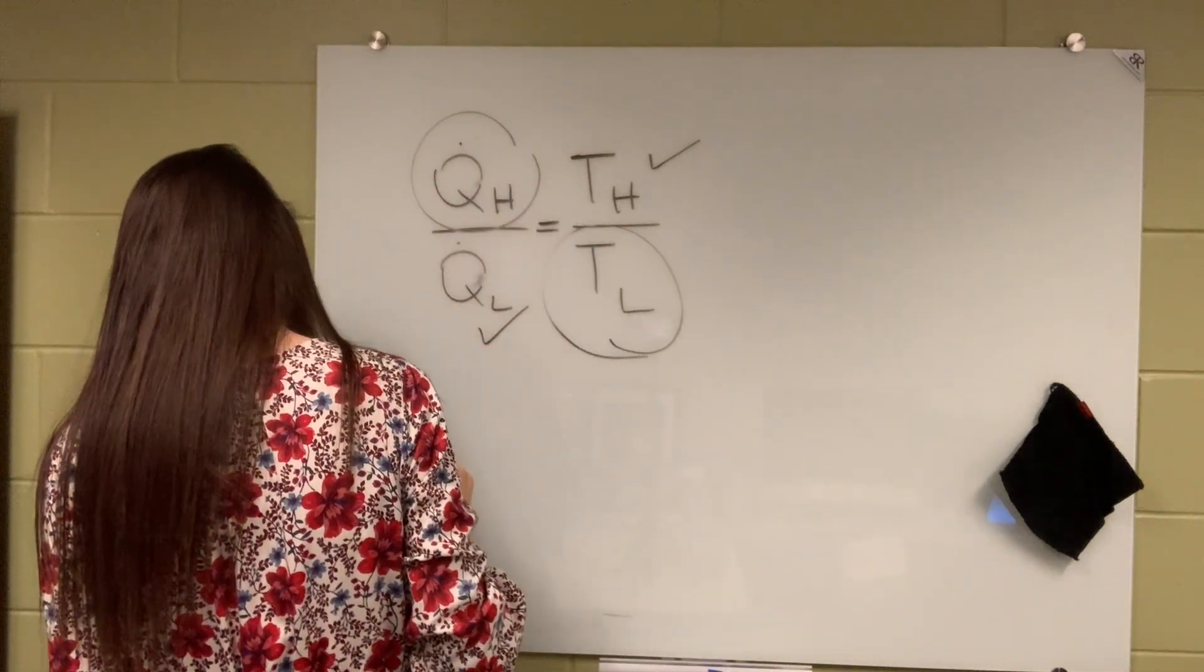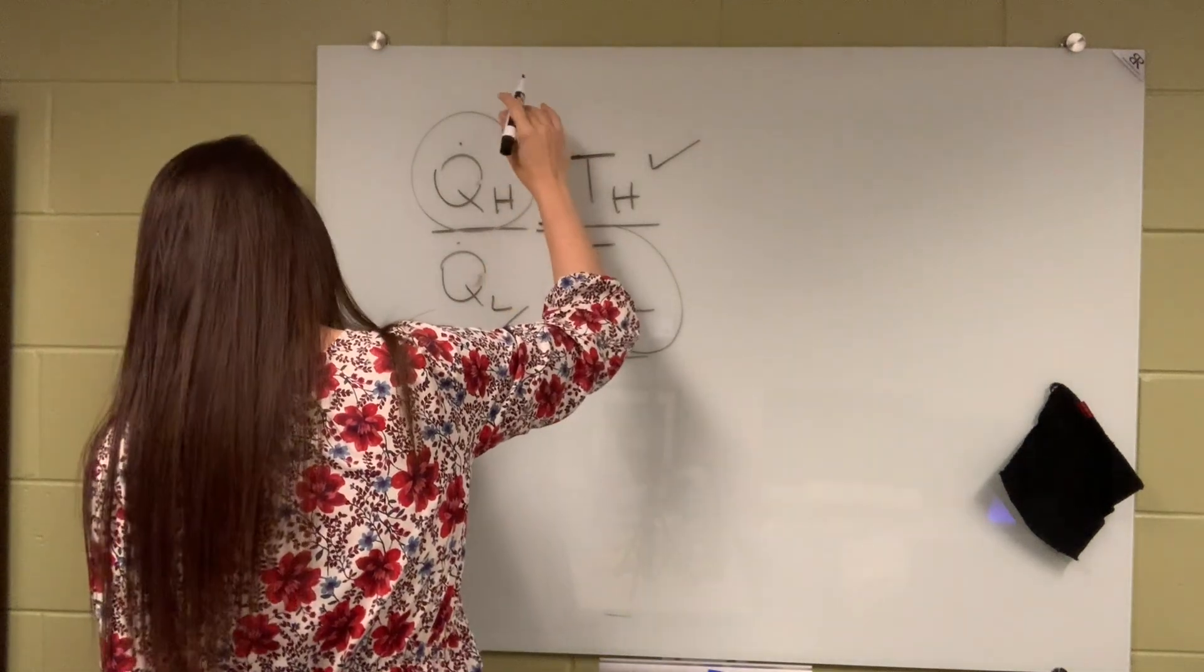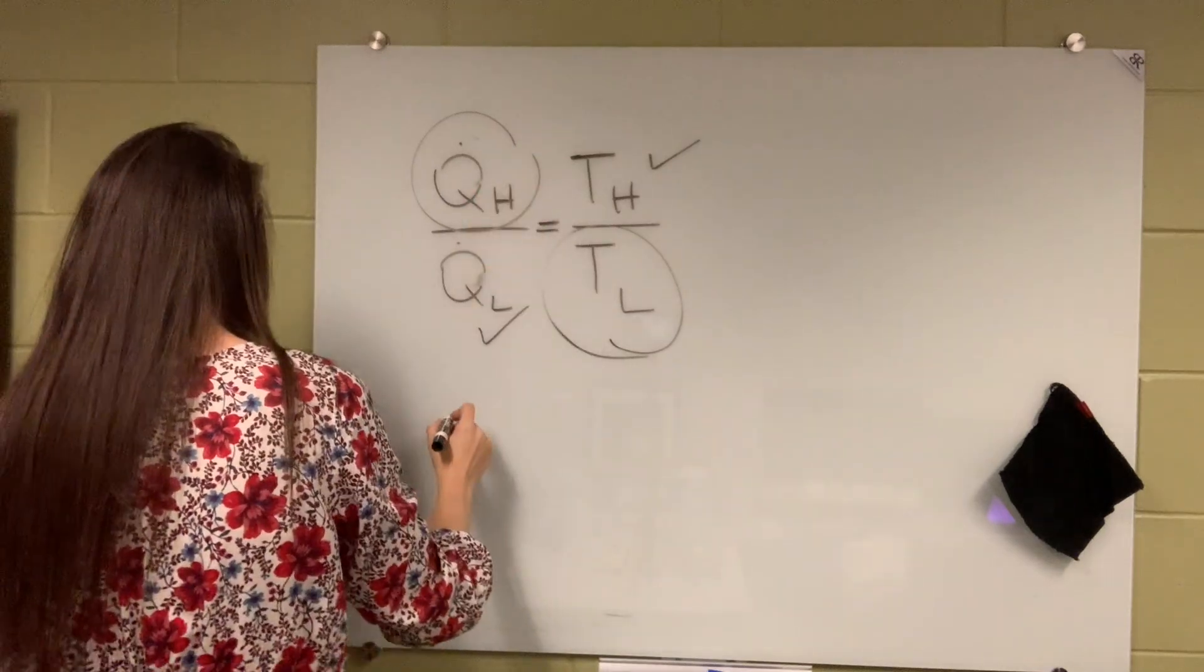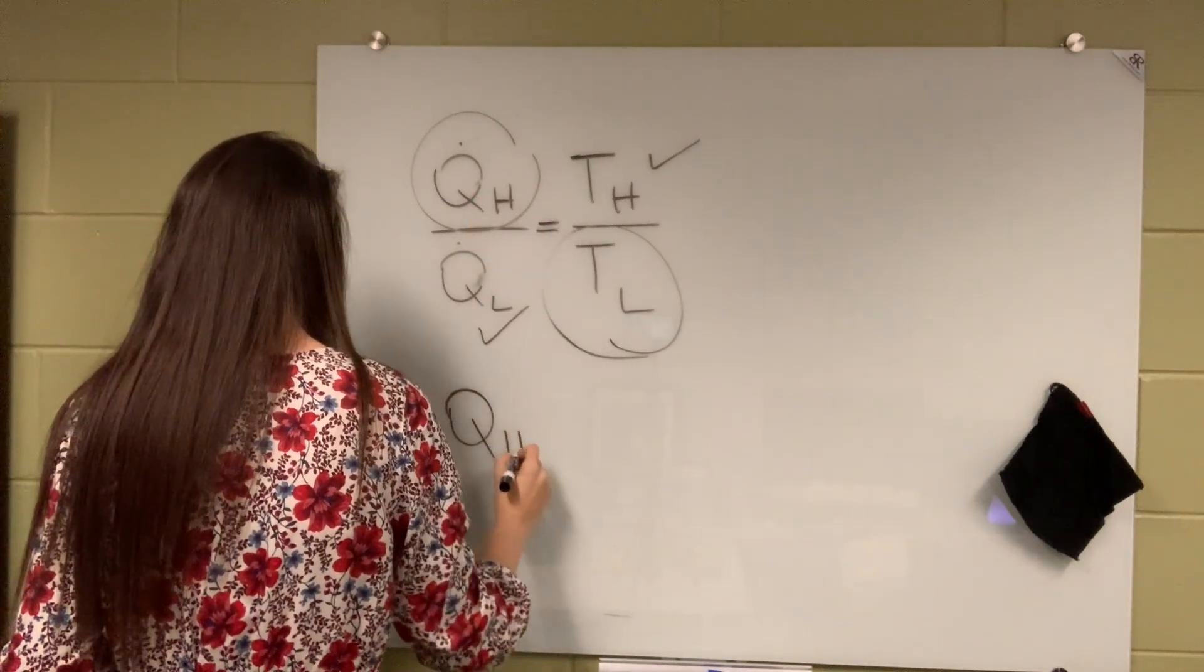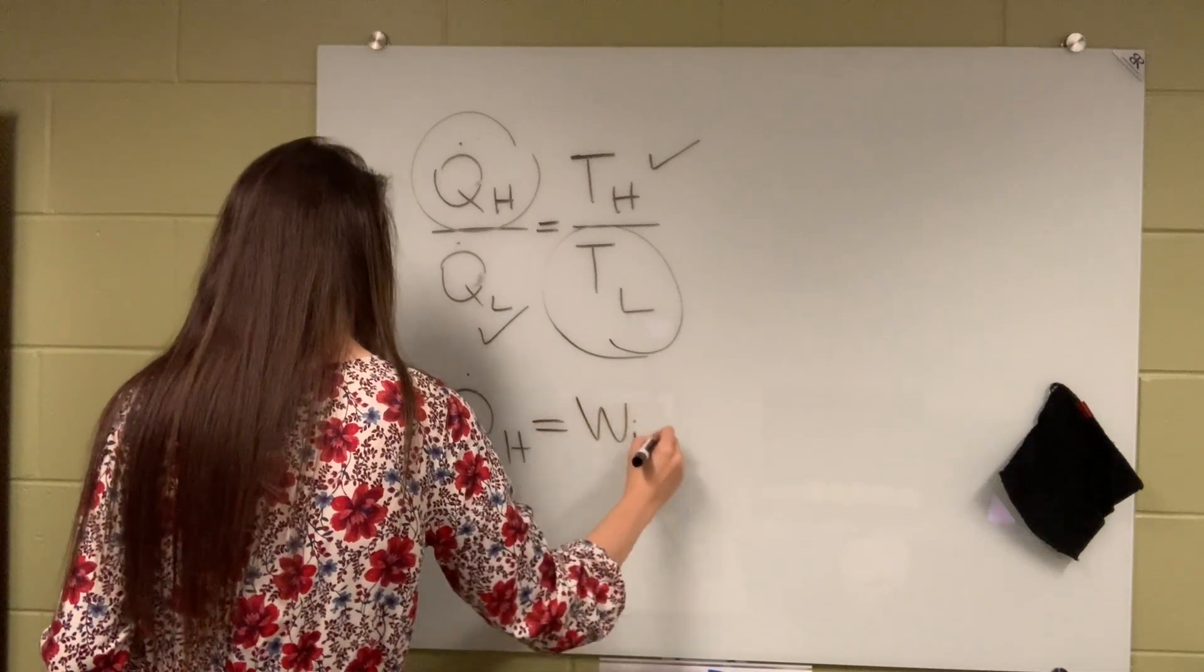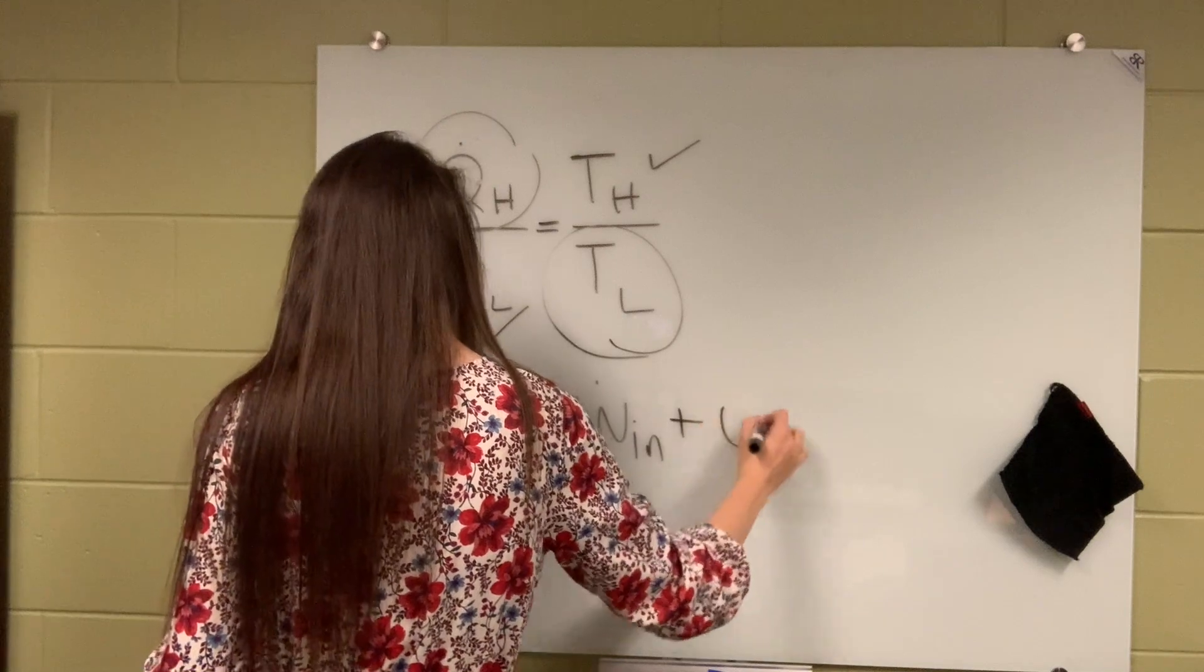Oh, it is already given to us, right? It is already given. It is already given. Oh no, it's not. So we can calculate this one. We can calculate QH is actually equal to W power in plus QL.